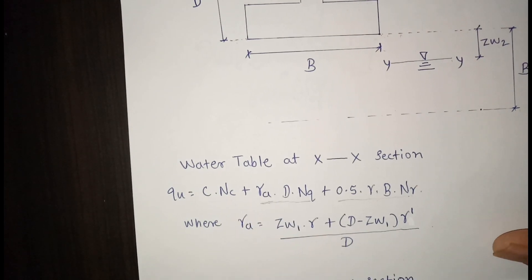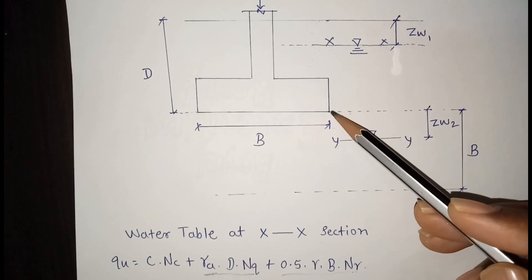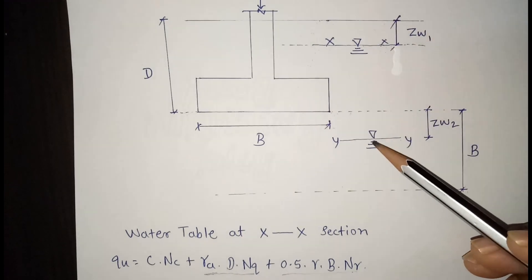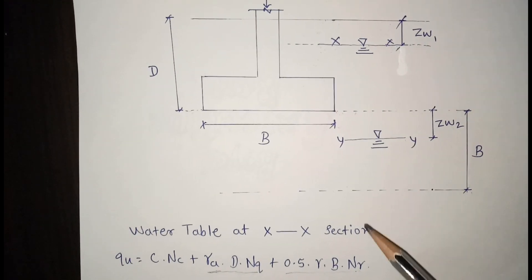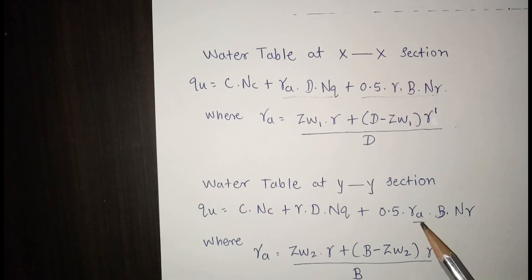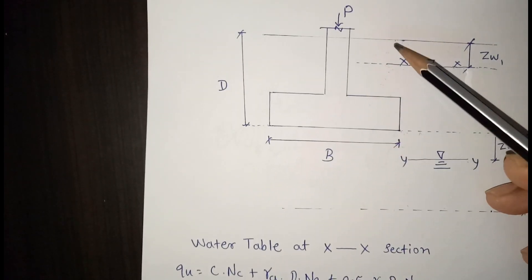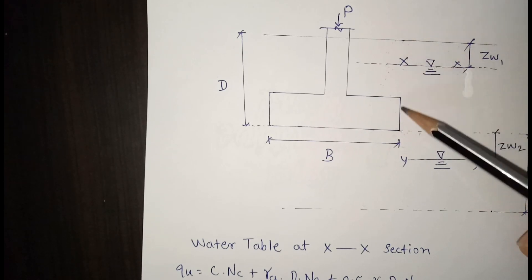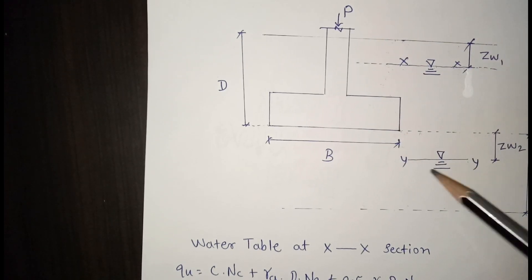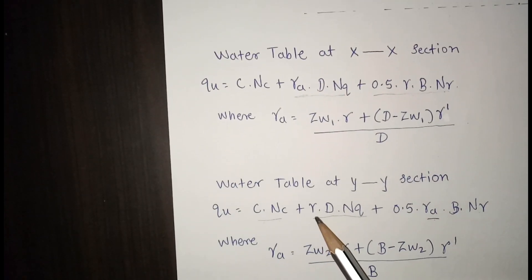Now we consider the YY section — water table below the foundation. Here the entire soil above the foundation is dry, so for the second (overburden) term we use γ_dry directly and no averaging is needed. The water table affects only the third term, which is related to the soil below the foundation.